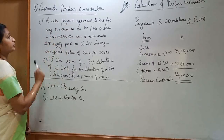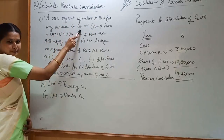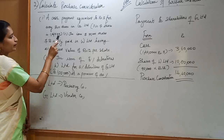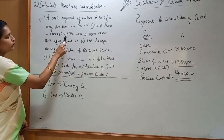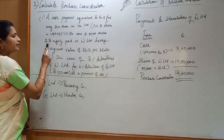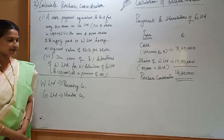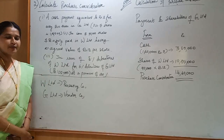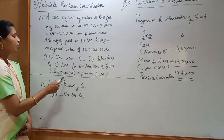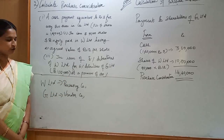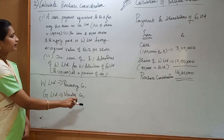Calculate purchase consideration for the next problem. A cash payment equivalent to rupees 3 for every rupees 10 share in G Limited; number of shares in G Limited is 1,20,000. Second, the issue of 90,000 shares of rupees 10 fully paid in W Limited having an agreed value of rupees 12 per share. Third, the issue of 5% debentures of W Limited for 6% debentures of G Limited of rupees 1,00,000 at a premium of 20%. W Limited is the purchasing company and G Limited is the vendor company.